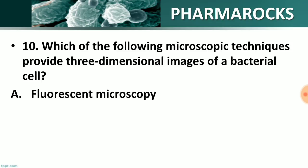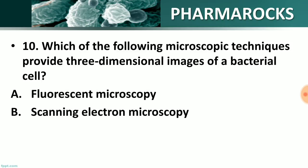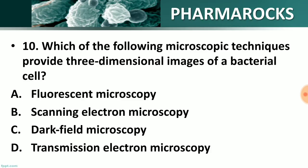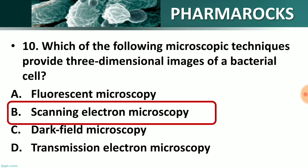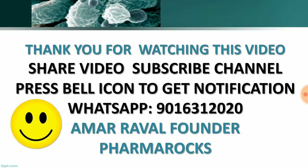Question number 10: Which of the following microscopic techniques provides a three-dimensional image of a bacterial cell? Options: A) fluorescent microscopy, B) scanning electron microscopy, C) dark field microscopy, D) transmission electron microscopy. The right answer is option B — scanning electron microscopy (SEM) is used for 3D images of bacterial cells.